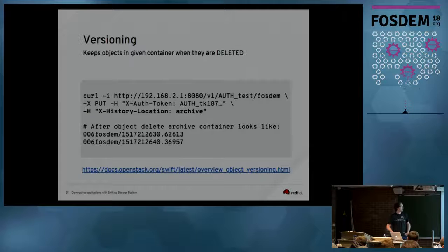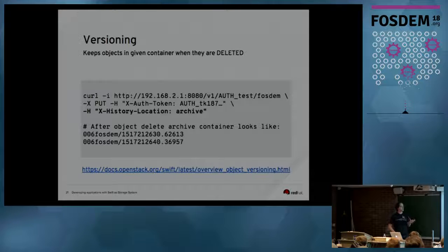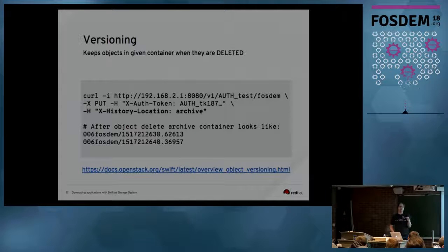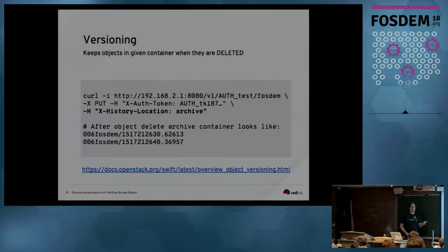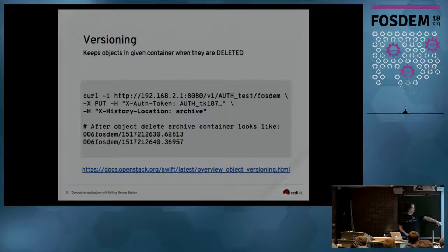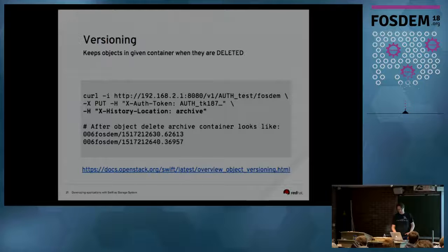Versioning is another helpful feature of Swift. When you have a container, you can specify another container as an archive location. Whenever you overwrite an existing object, the older version is still stored in your archive container. The same applies to delete requests — if you send a delete to a container where versioning is enabled, it will restore the last version and add an additional delete marker, which is a zero-byte object with a content type of 'delete object'.